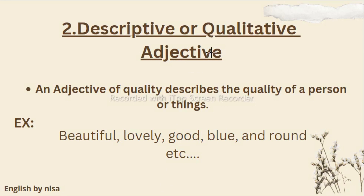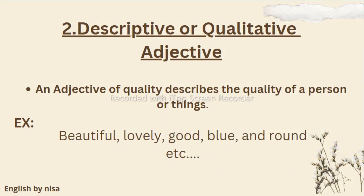The second type of adjective is descriptive or qualitative adjective. This adjective describes the quality of a person or thing. You could say beautiful, lovely, good, blue, black, circle, square — the terms you use to describe something. Words like poor, weak, honest, handsome, red, green, blue, black come under descriptive or qualitative adjectives. When you describe a quality or shape — it is a square, circle, rectangle — that is a descriptive adjective.